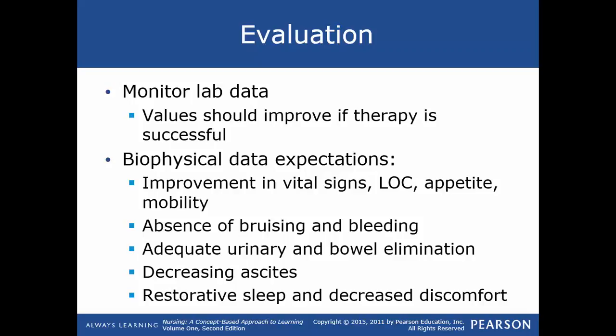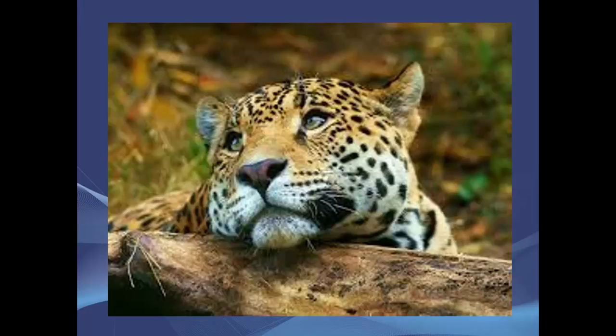Evaluation involves monitoring lab data including liver function tests, CBC with hemoglobin and hematocrit, coagulation studies, electrolytes, serum albumin, and serum ammonia levels, which should improve if therapy is successful. Expected biophysical improvements include better vital signs, level of consciousness, appetite, and mobility; absence of bruising and bleeding; adequate urinary and bowel elimination; decreasing ascites as reflected in decreased abdominal girth measurements; and restorative sleep and decreased discomfort. That concludes the lecture on liver disease, specifically cirrhosis.